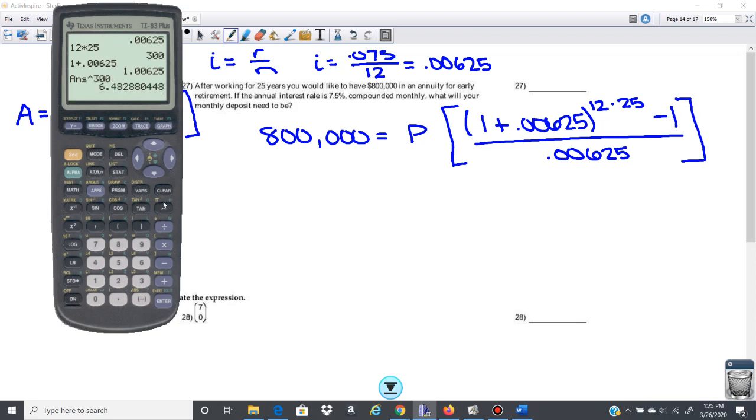And then I'm going to subtract 1. So that's going to give me my numerator. Then I'm going to divide by the 0.00625.